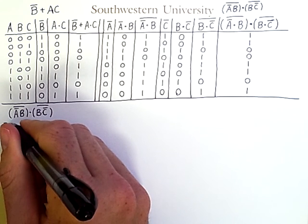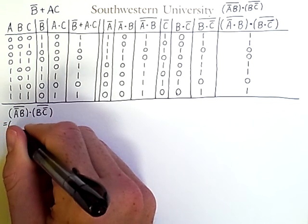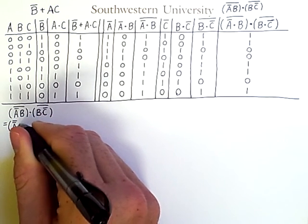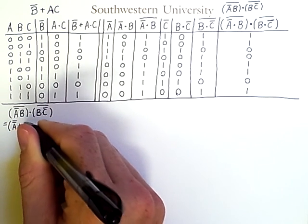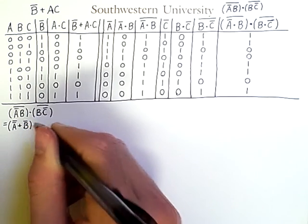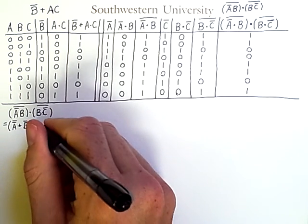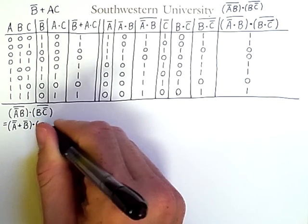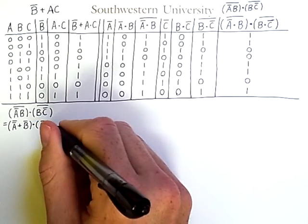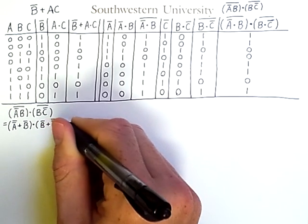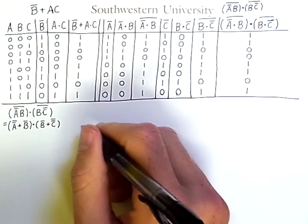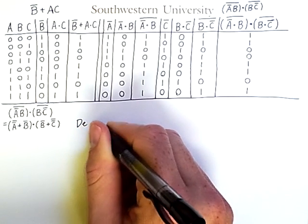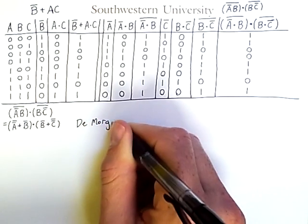This sub-expression transforms into not-not-A or not-B. And this sub-expression transforms into not-B or not-not-C via two applications of De Morgan's Law.